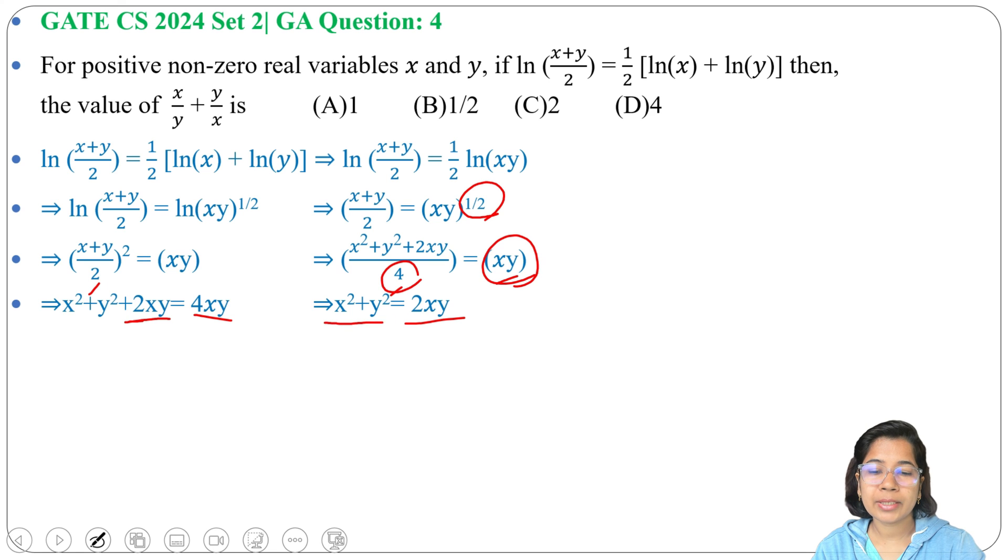Now we have x^2 + y^2 = 2xy. From this, we need to find x/y + y/x.